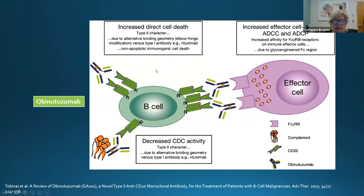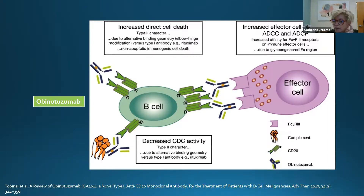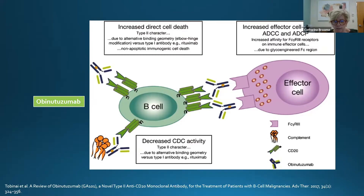Obinutuzumab is a type 2 anti-CD20 monoclonal antibody that increases direct cell death through alternative binding geometry versus rituximab, increases cell-mediated death, and decreases CDC activity. It has properties that may make it a slightly better option than rituximab, and you may see more combinations with obinutuzumab in lieu of rituximab especially in CLL and other lymphoproliferative disorders.